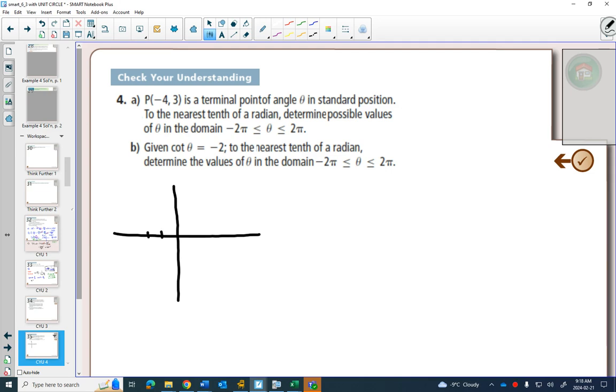So negative 4, 3 is right there. And apparently that's a terminal point, so that means my terminal arm of my angle goes through that point. And this is my angle theta in standard position, or one of my angles. There's many coterminal angles that would end there, but this gives me an idea of what's happening.